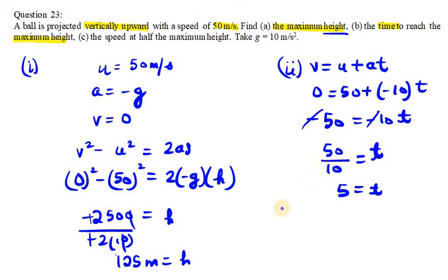Now the third one, speed at half the maximum height. Again we are using v² = u² + 2as.